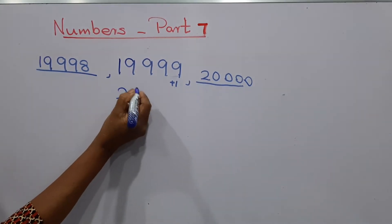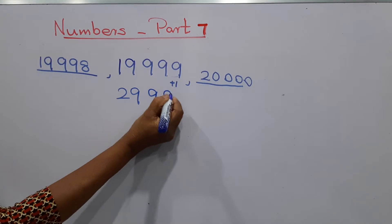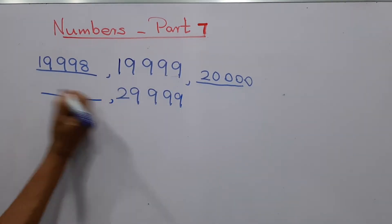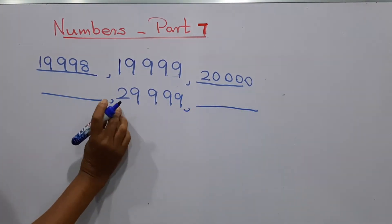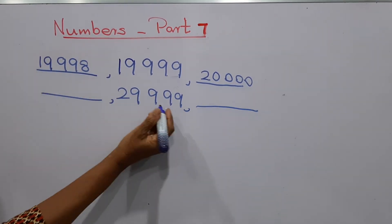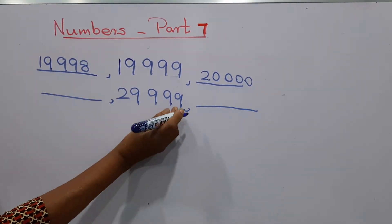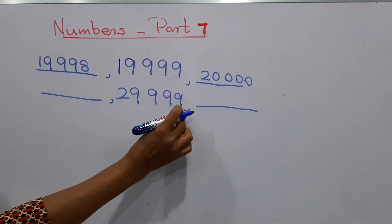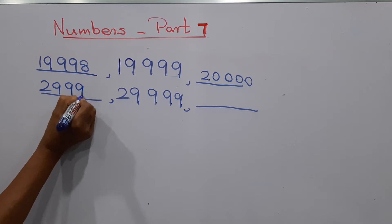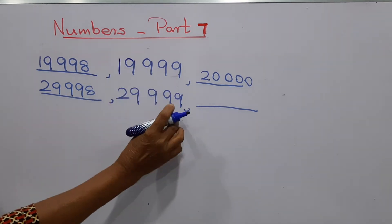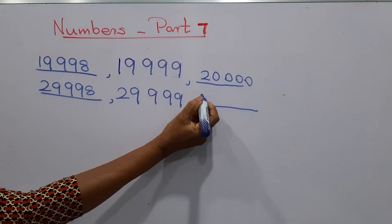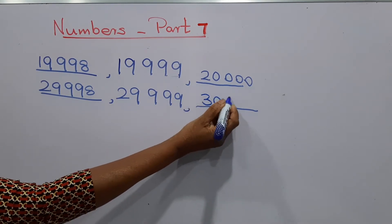We'll move to the next number: 29,999. What is the number before 29,999? That means you have to deduct 1 from the ones place — that is 29,998. When you add 1, it becomes 30,000.